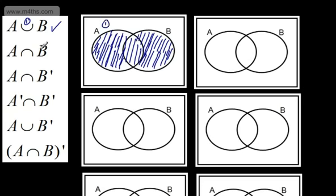This is A intersection B. This means A and B — so it's in A and it's in B. That's the intersection right here, in the overlapping part. That's number 2.